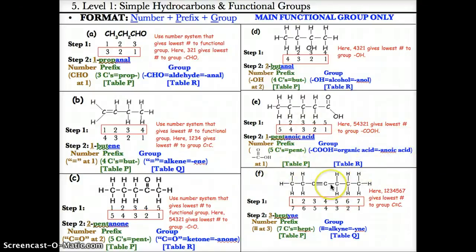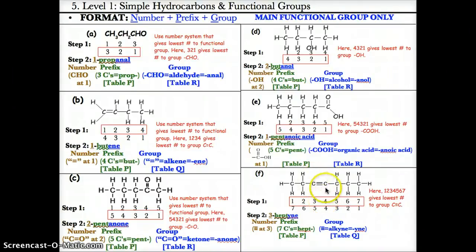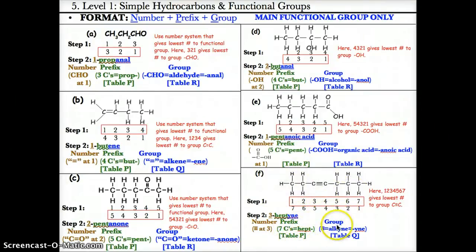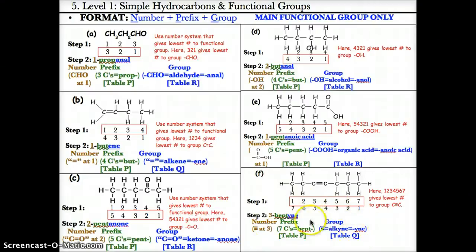Example F: a structure with a triple C-C bond. Step one: number the carbons forward 1, 2, 3, 4, 5, 6, 7 and backwards 7, 6, 5, 4, 3, 2, 1. Step two: the functional group is a triple C-C bond. The lowest location where it starts is 3 because 3 is less than 5, so use the forward system 1 through 7. The prefix is hept- because there are 7 carbons; the group ending is -yne because a triple C-C bond is an alkyne, which has the ending -yne based on table Q. The name is 3-heptyne.